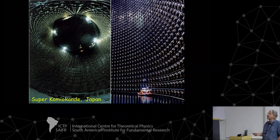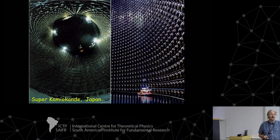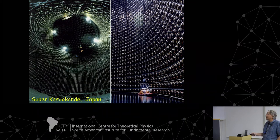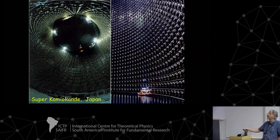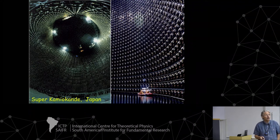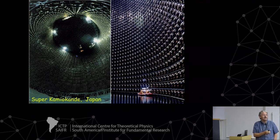The Super-Kamiokande detector in Japan — preceded by the smaller Kamiokande detector — is a cavern underground filled with ultra-pure water and lined with photomultipliers. You can see people cleaning the surfaces of the photomultipliers; there are 12,000 of them in this cavern, which is 70 meters high and 50 meters across. A neutrino passing through once in a while interacts with an electron or with nucleons inside.